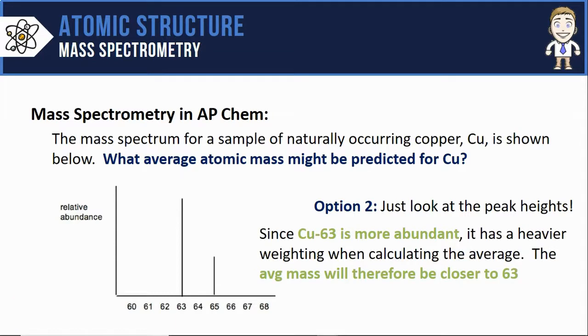So here's what you should have been thinking. I know the average has to be between 63 and 65 because those are the only two isotopes. However, since the copper 63 is way more abundant, the peak is much taller, it's going to factor in more.